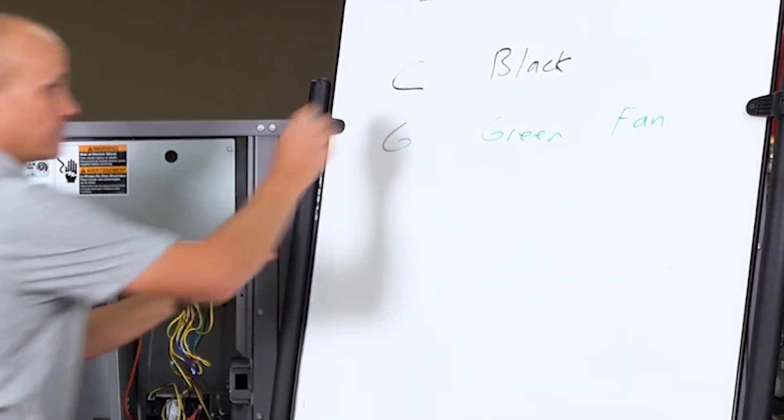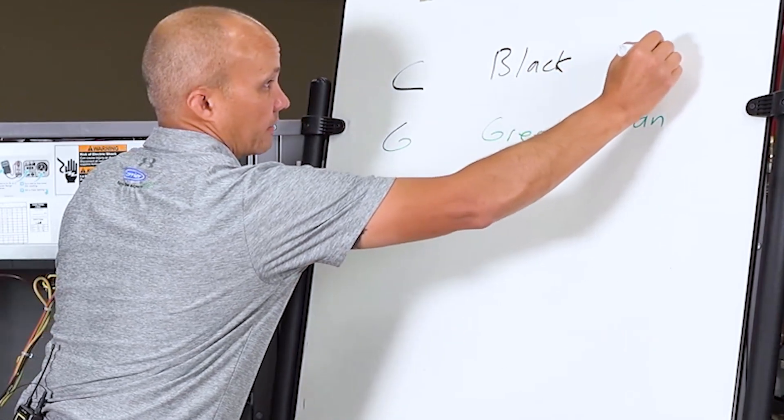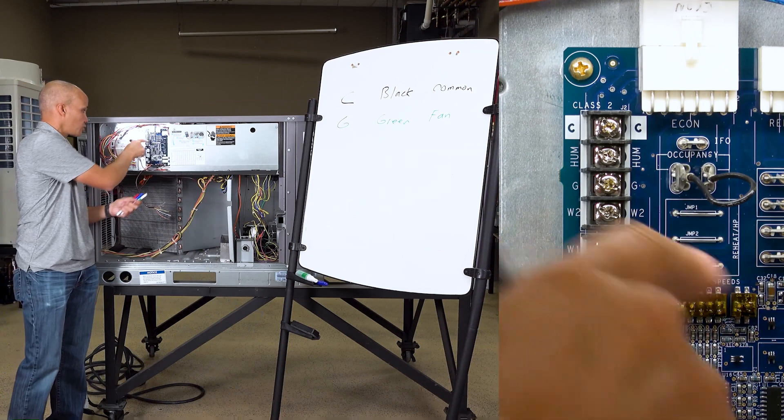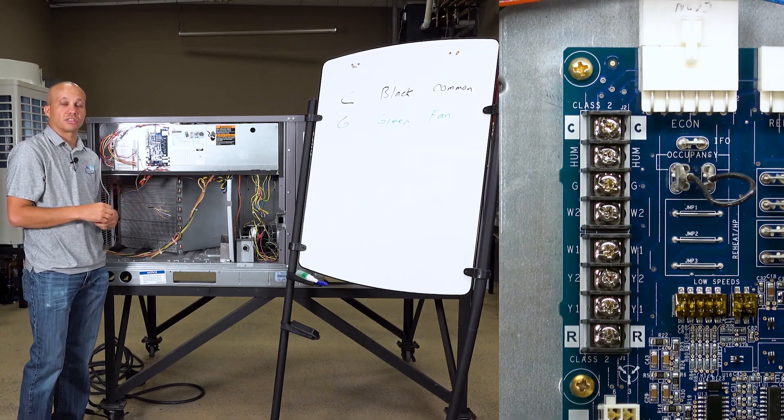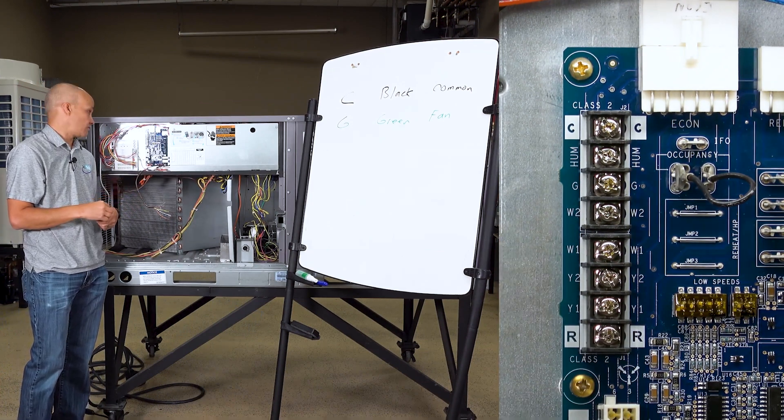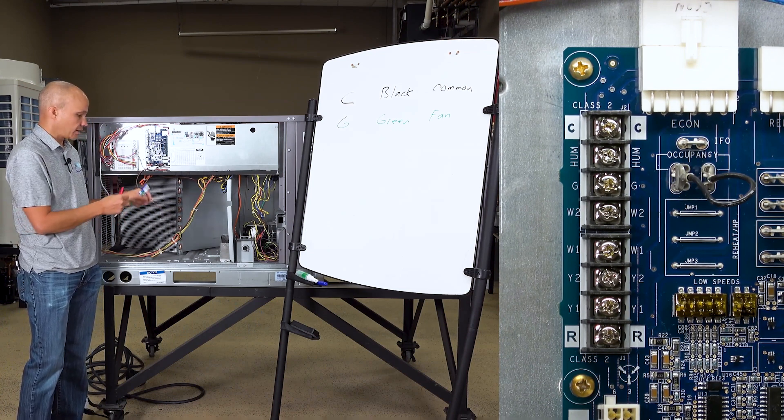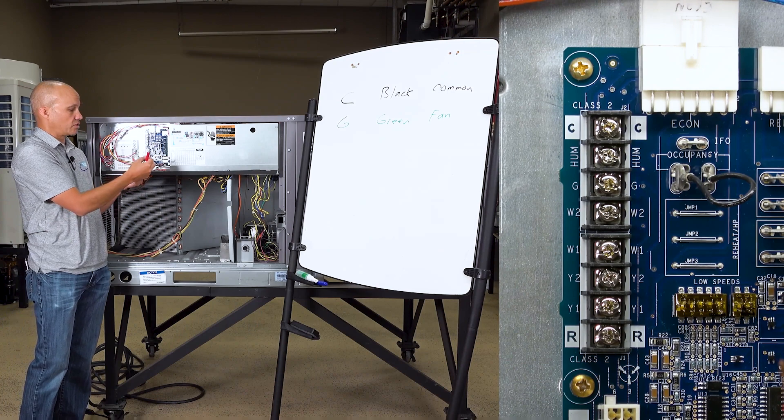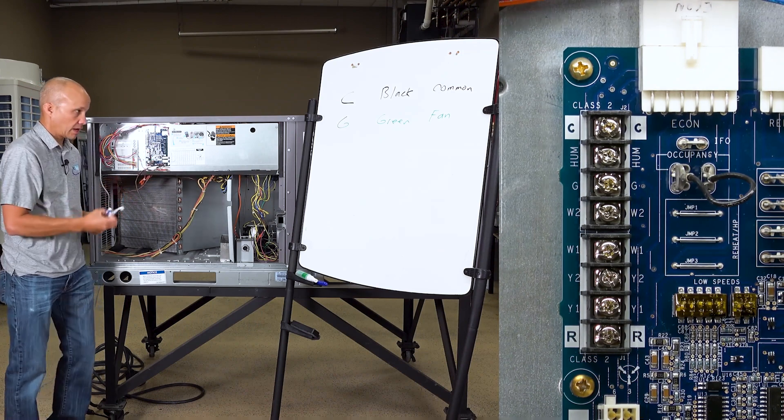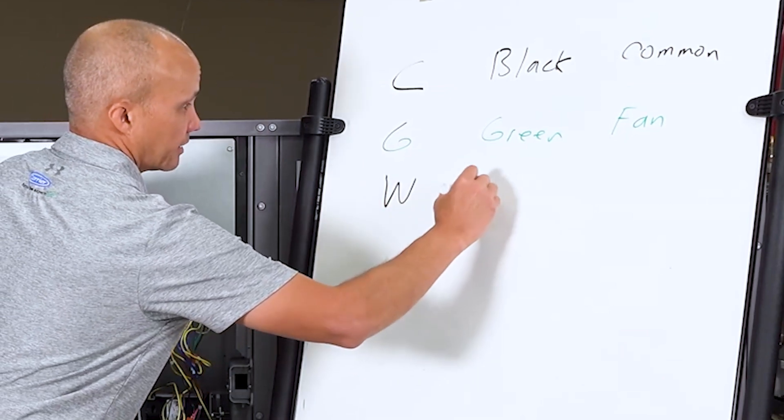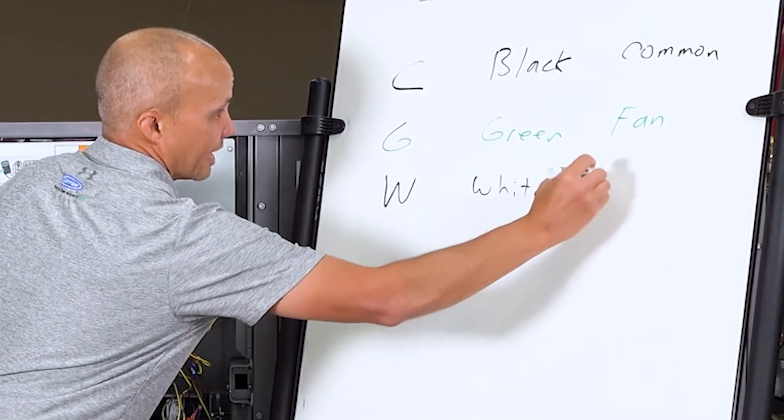The next one on here is W2, which we're not using in this case. W2 would be second stage of heat. Below that is W1. We are going to use W1. In our case for W1 we're going to use it with the white wire. I can't really do that on the board here with a whiteboard, so we'll just do it in black. That'll be white and that'll be my heat.